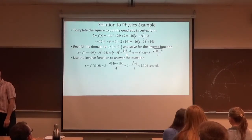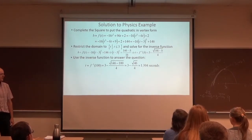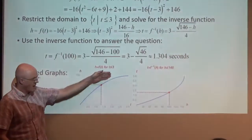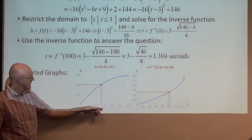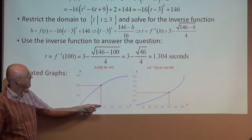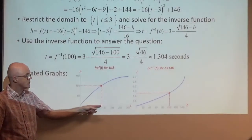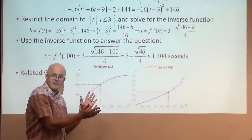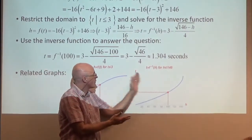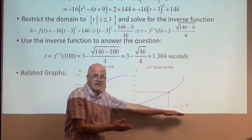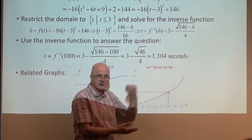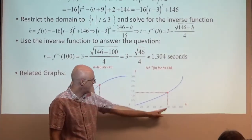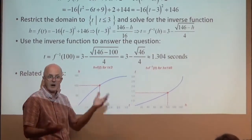Then plug h equals 100 into the inverse function, and the answer is about 1.304 seconds. Here's a way to graph it: this is the original parabola where h is a function of t — when does h equal 100? It equals 100 when t is about 1.3. For the graph of the inverse function, I relabel the axes: now t is a function of h. If you graph that square root function it looks like this — when h equals 100, t is about 1.3, representing the answer to the problem.